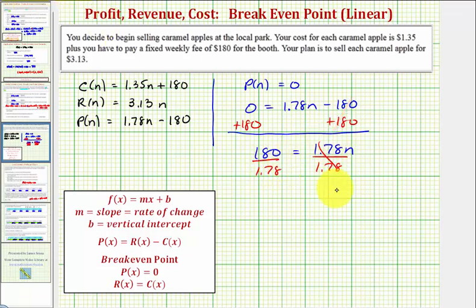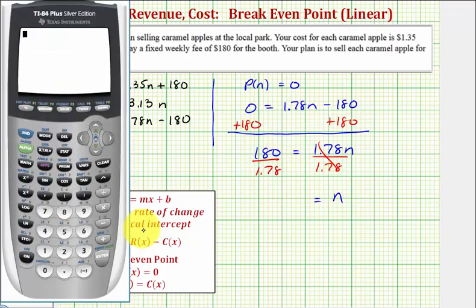So we have n equals this quotient, which we'll find on the calculator. So here, 180 divided by 1.78 is approximately 101.12.